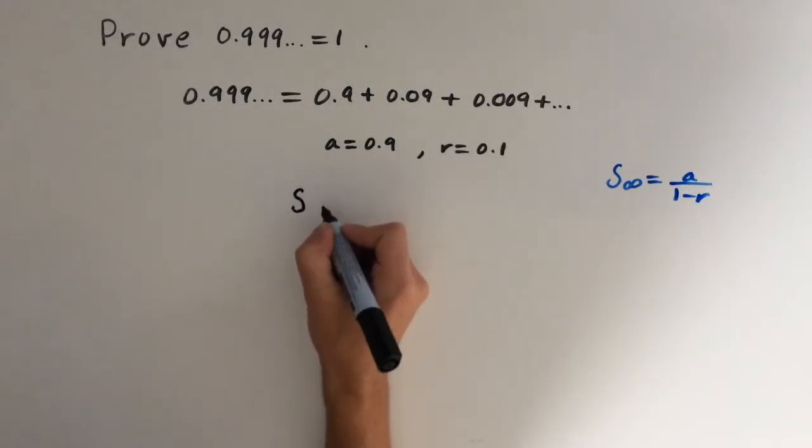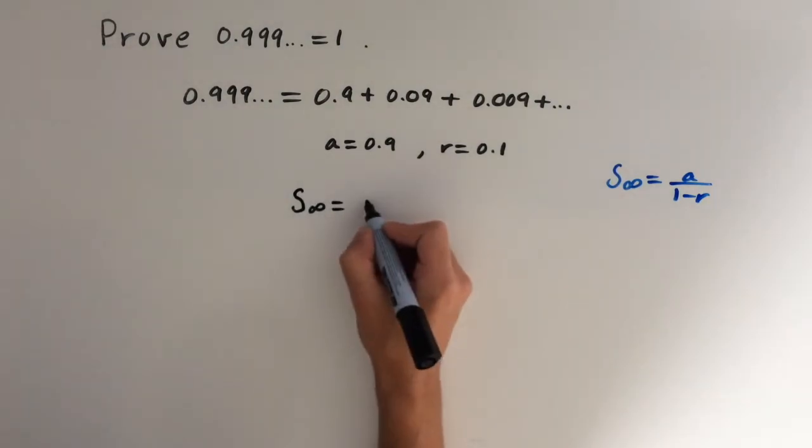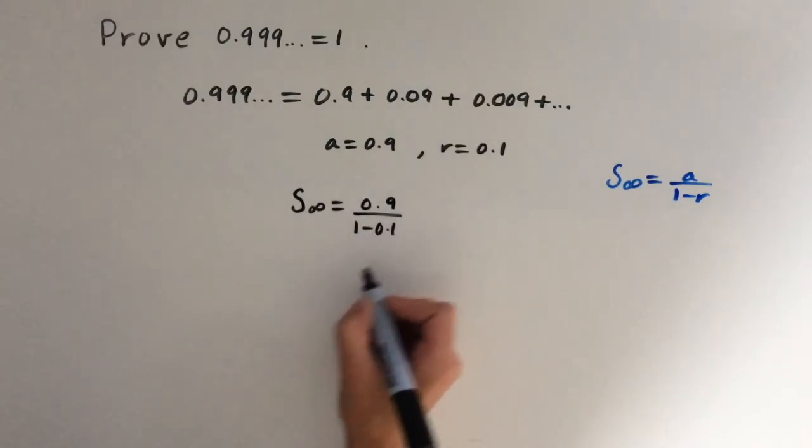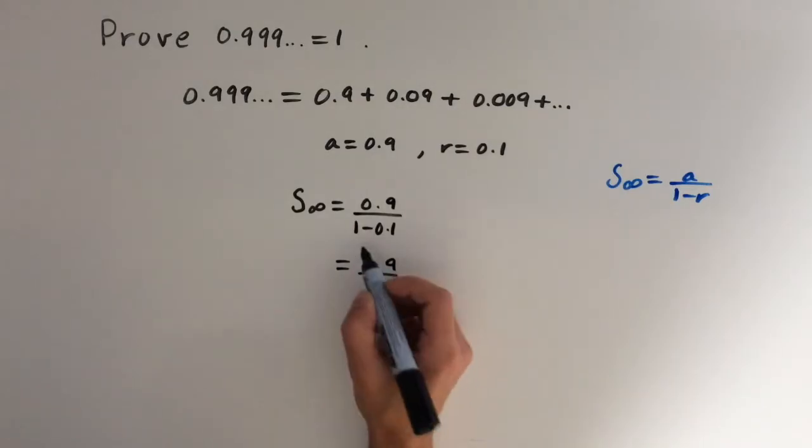So this gives us a sum of 0.9 recurring is equal to 0.9 over 1 minus 0.1. So this equals 0.9 over 1 minus 0.1 is just 0.9.